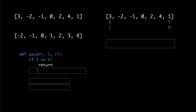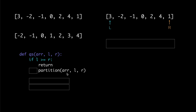But what about the recursive case? For that, let's take a look at this example where we're given an array with l being 0 and r being 6. In the recursive case, we're going to do what's called partition. We're going to use a function called partition that takes three arguments, just like qs — the array, l and r — and this will apply partition to the section of the array between l and r.